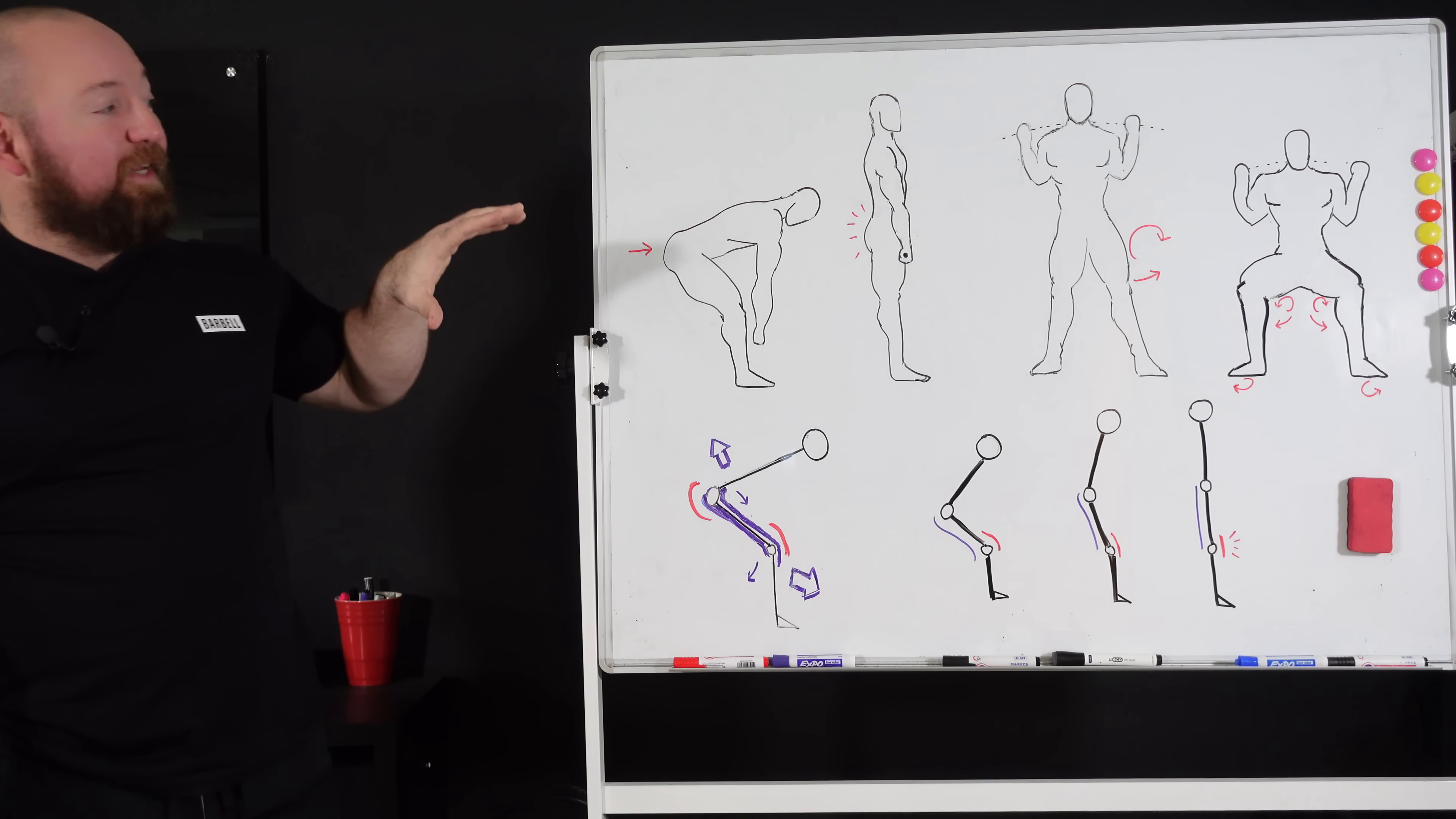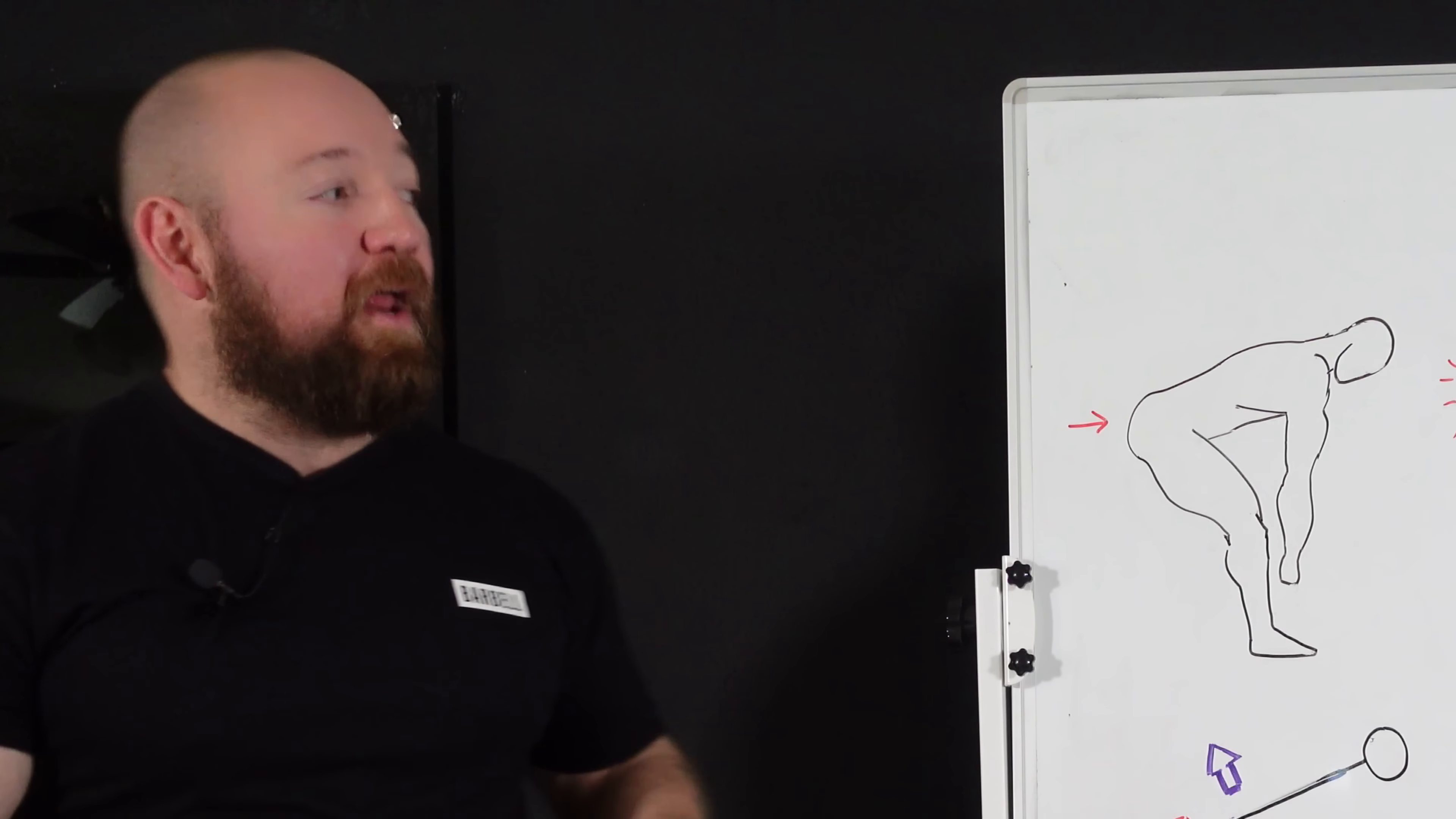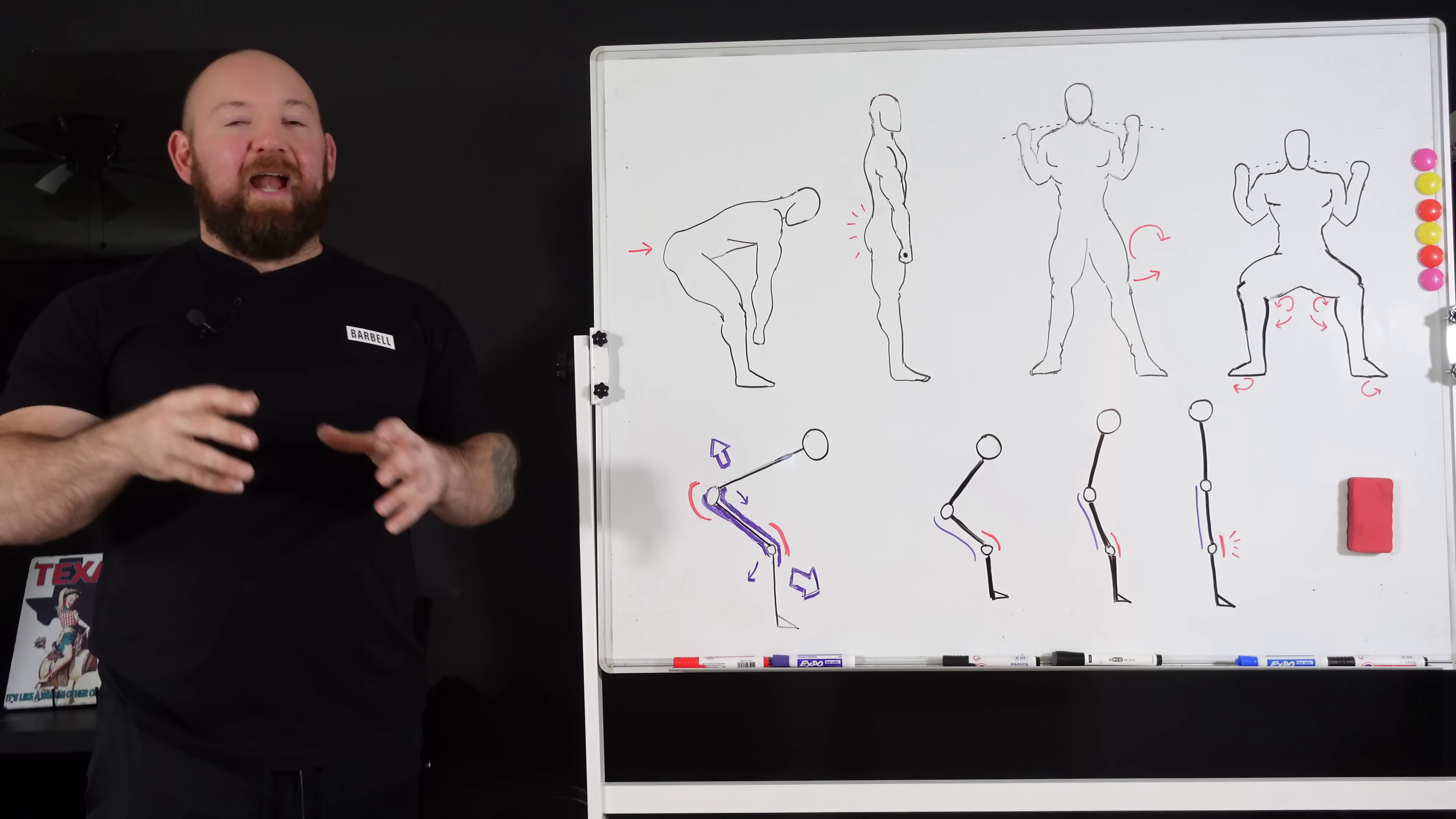So this shows us a couple of things. It shows us that success in squatting and deadlifting has just as much to do with the communication between these different structures as it does with any one structure being strong. There's some wisdom to taking your strong points and making them stronger, but in the face of this big asymmetry, this uneven development, you are going to severely limit your potential to move weight because you just won't be efficient. This illustrates how important obviously the quads are to something like squatting, but also why the hamstrings are important because they do the job together.